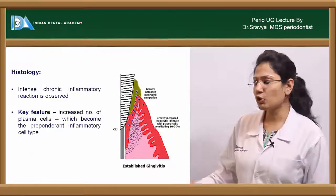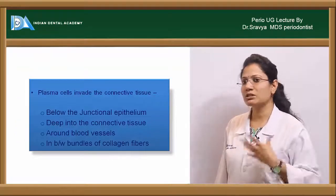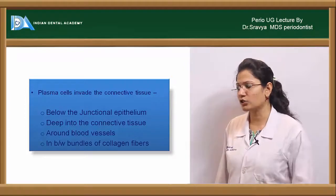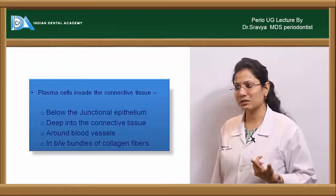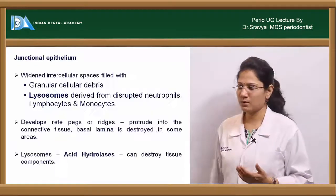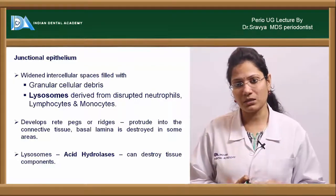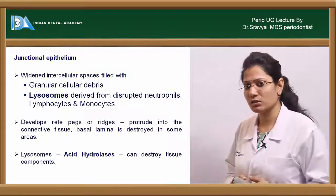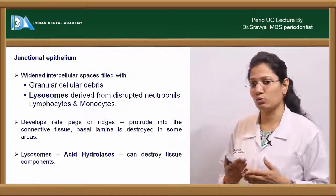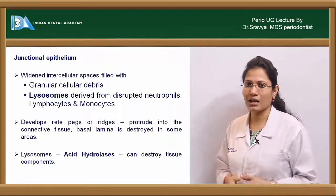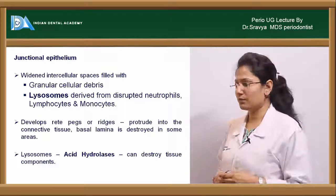Histologically, the most predominant cell types are plasma cells and B cells. Plasma cells are seen invading the connective tissue just below the junctional epithelium, deep into the connective tissue, and around blood vessels and between bundles of collagen fibers. The junctional epithelium shows widened intercellular spaces filled with granular cellular debris and lysosomes derived from disrupted neutrophils. Lysosomes are enzymes released from the granules of neutrophils, lymphocytes, and monocytes.